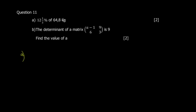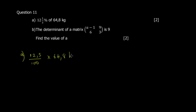Evaluate 12 and a half percent of 64.8 kg. There are many ways, but here's one method: 12.5% means 12.5 over 100, and the percent sign can be replaced by over 100. So you write 12.5 over 100, then multiply by 64.8 kg.